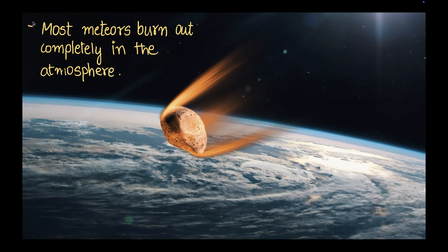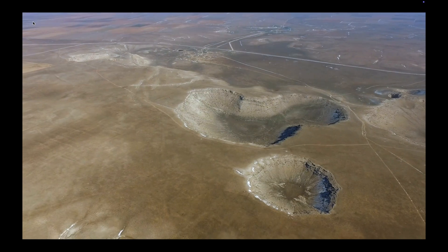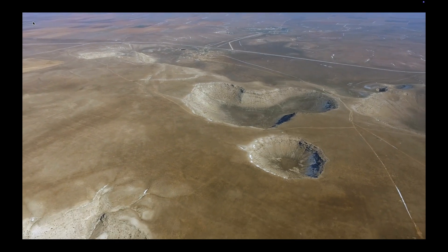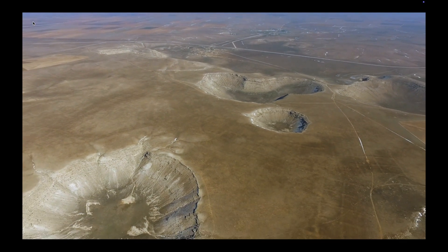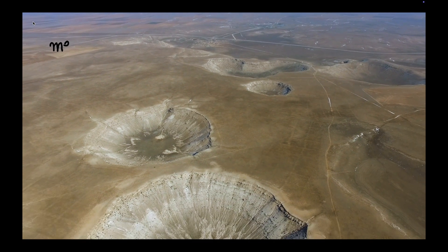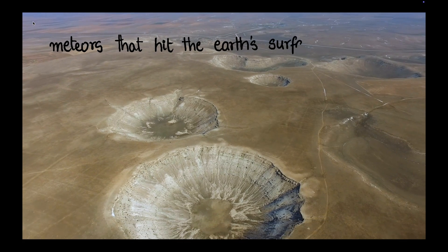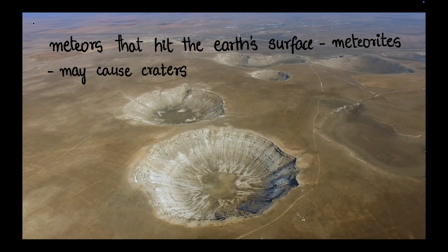But there are some cases where meteors have struck the earth's surface and left a huge crater like this. There are quite a few craters on the earth's surface which were made by meteors. Now meteors that hit the earth's surface, they're called meteorites. These may cause craters. If they're large enough, sometimes they're very small like a small pebble and that does not cause a crater. But if they're large enough and they are falling onto land and not the sea, then they can cause craters.